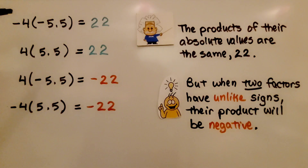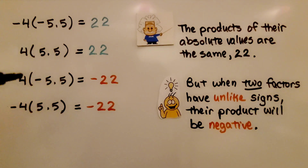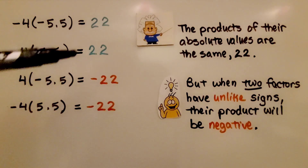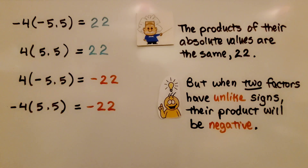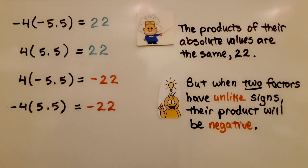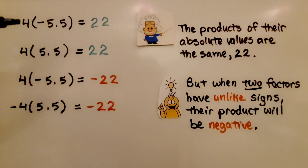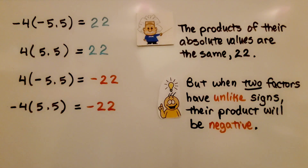Take a look at these equations: negative 4 times negative 5 and 5 tenths; positive 4 times positive 5 and 5 tenths; and a positive times a negative and a negative times a positive. The products of their absolute values are all 22. But when two factors have unlike signs, the product will be negative. Negative times negative is positive, positive times positive is positive, and as soon as we have two factors with unlike signs, the product is negative.